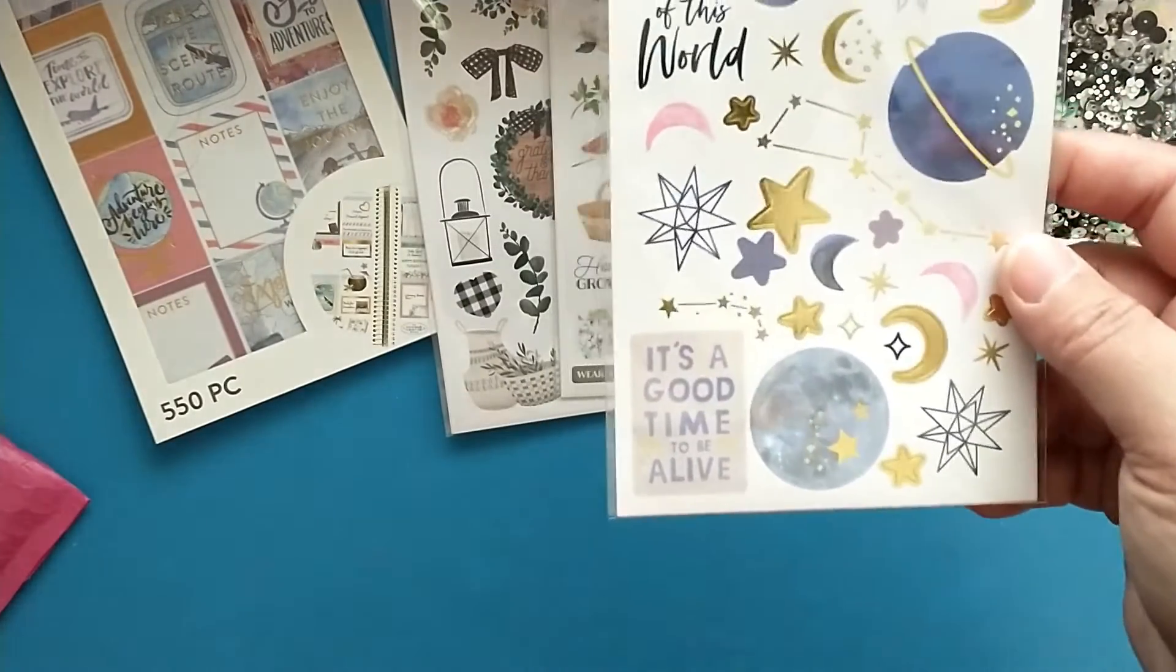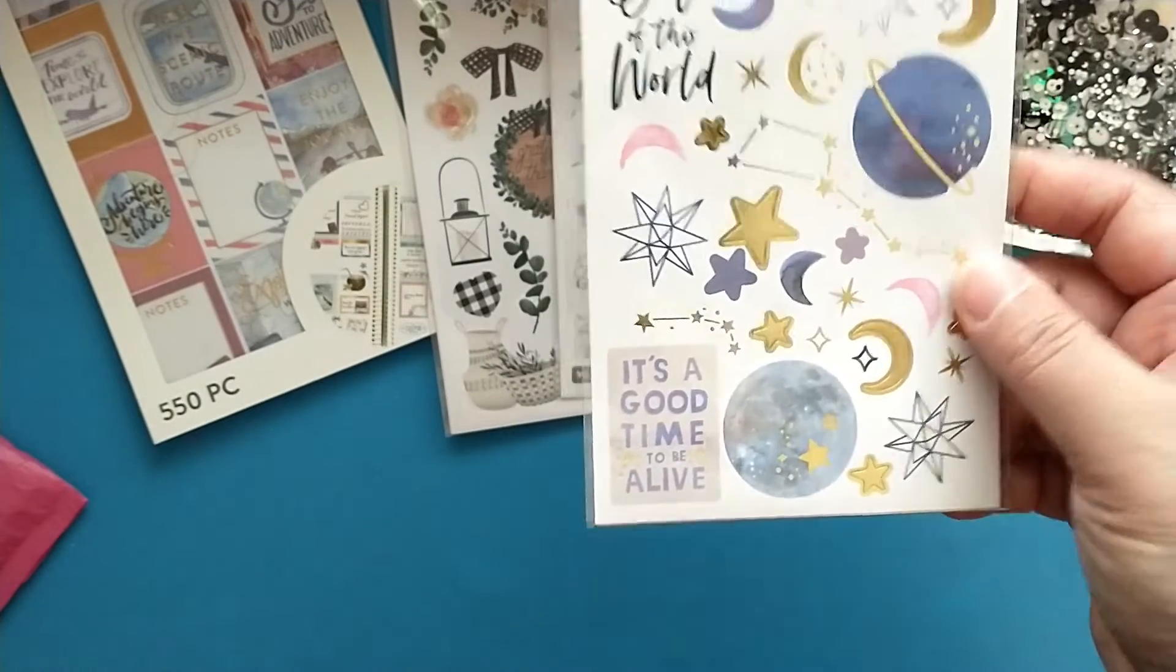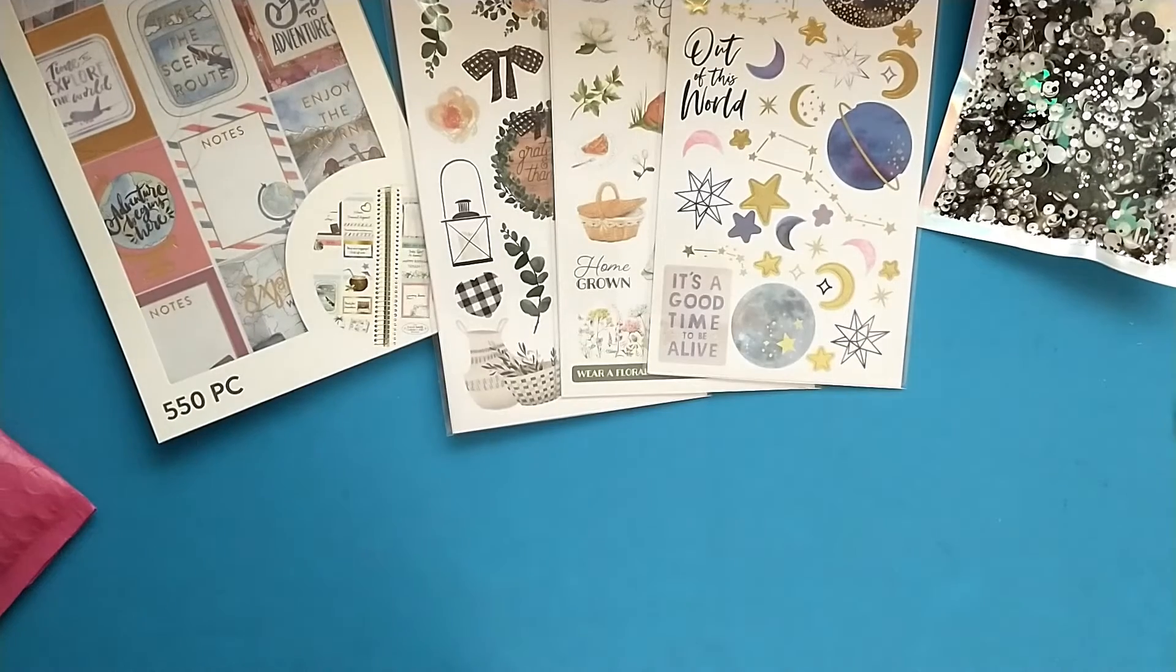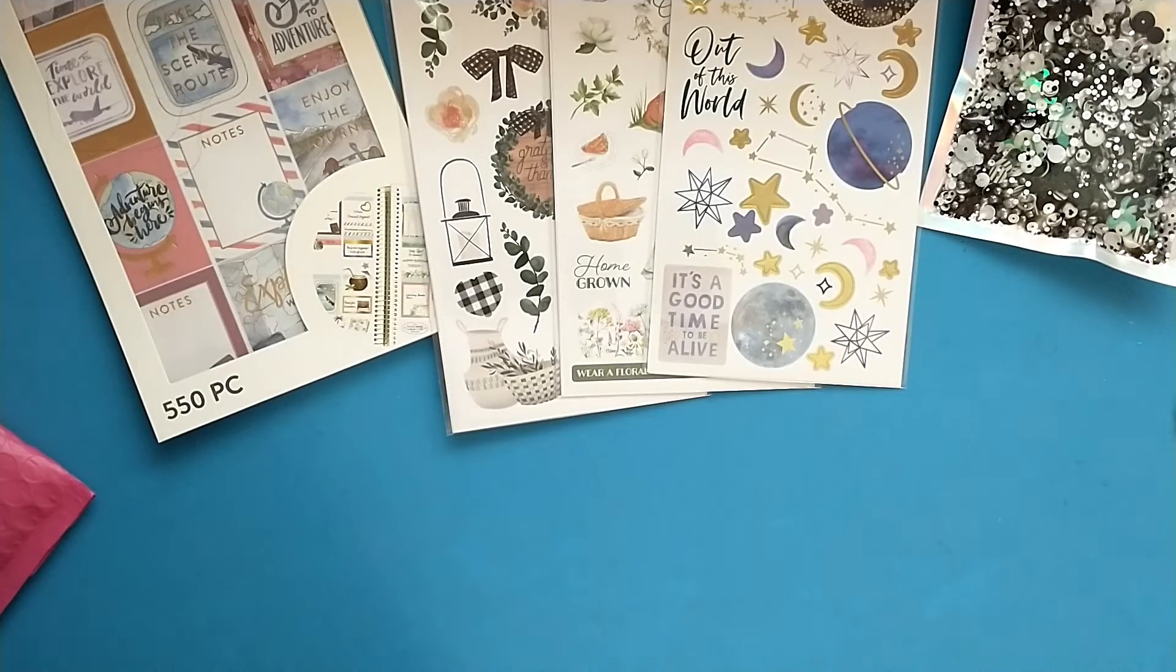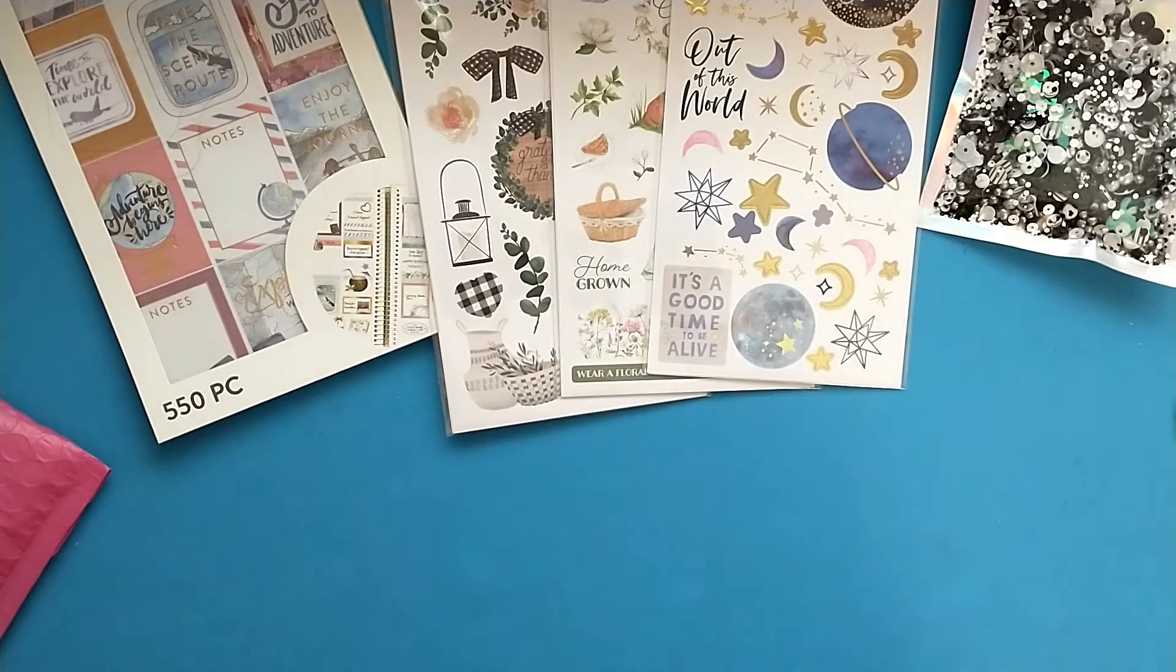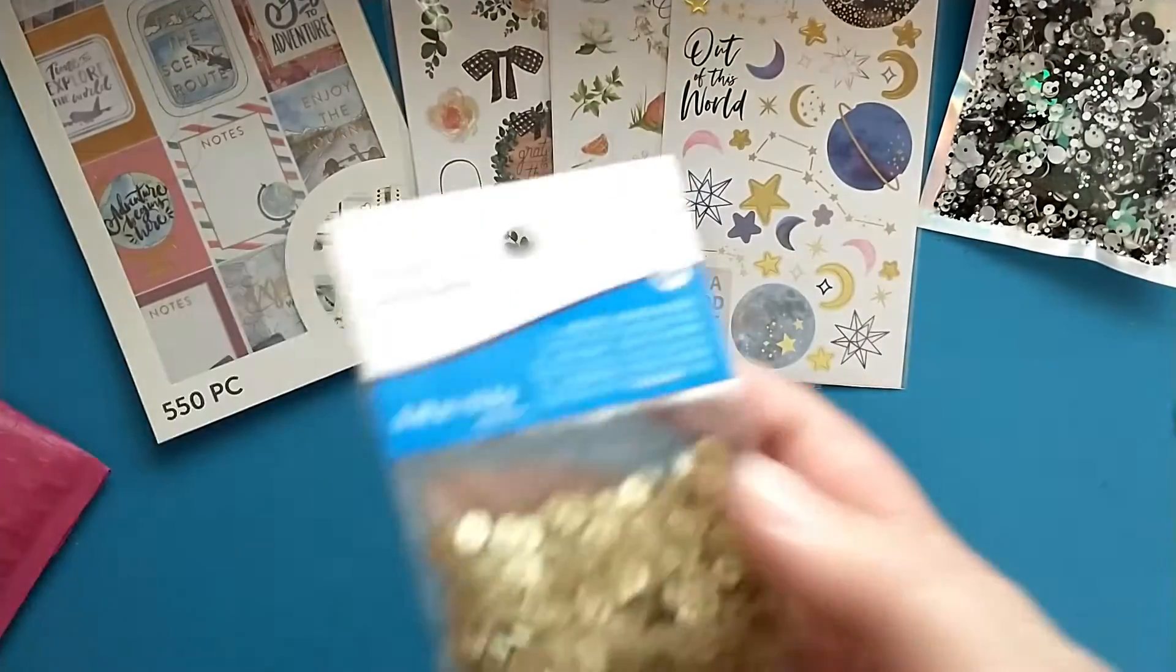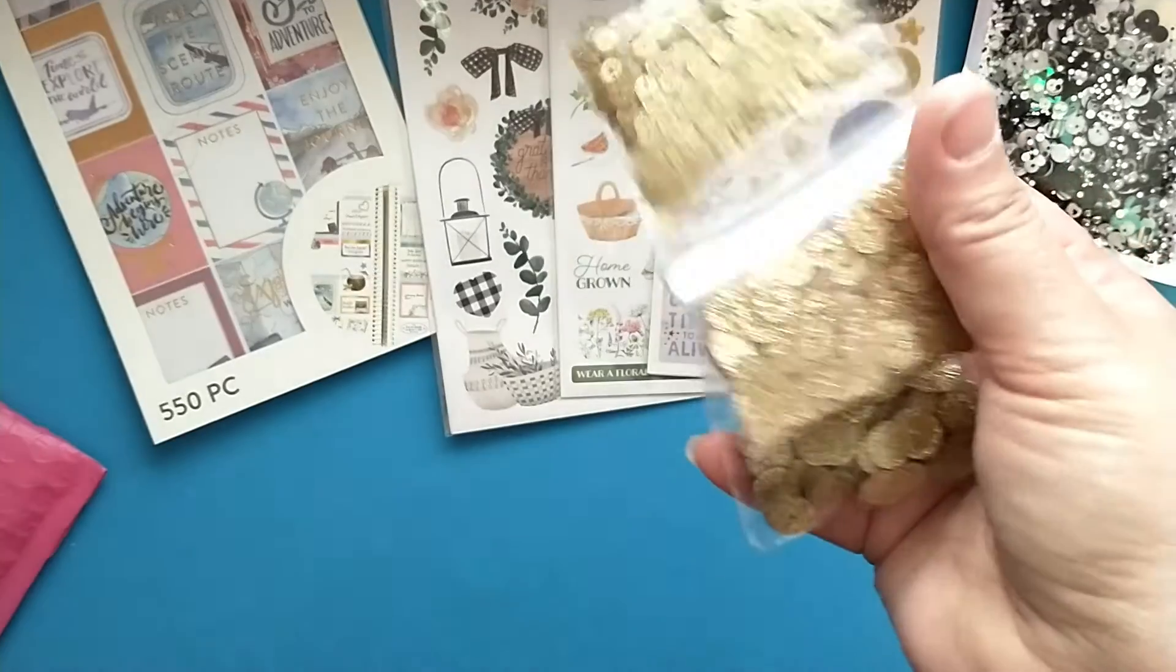And I love the cute little deer. I would have gotten more of these but they only had the one package. And then I really like this celestial one here, so I picked those three up. Then I hit the sequins jackpot - they had all of their sequins for a dollar - so I picked up two packages of these gold ones.